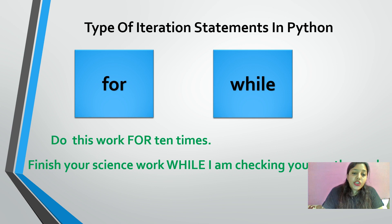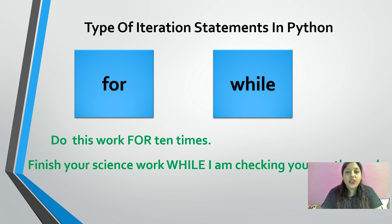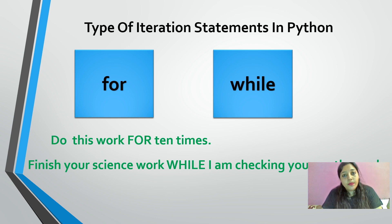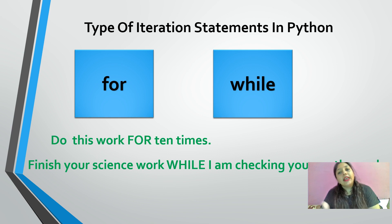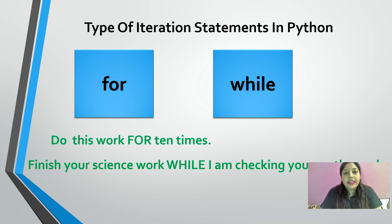On the other hand, consider: 'Finish your science work while I am going to check your maths work.' The person gives you a condition — until that person finishes evaluating your maths work, you have to complete your science work. Here the number of iterations is not known beforehand, but we have a condition which must be true. As soon as the condition becomes false, control transfers to the next statement. This is the basic difference between for and while loop: whether the number of iterations is known beforehand or not.